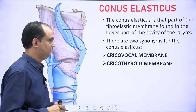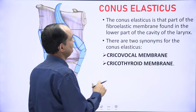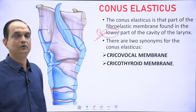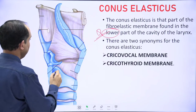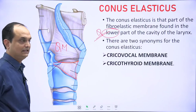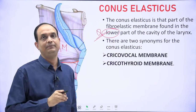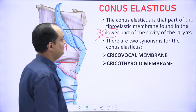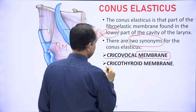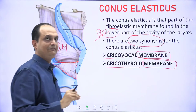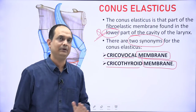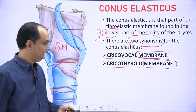The conus elasticus is the part of the fibroelastic membrane found in the lower part of the laryngeal cavity. The upper part is lined by the quadrangular membrane and the lower part by the conus elasticus. There are two synonyms for conus elasticus that cause student confusion: cricovocal membrane and cricothyroid membrane. All three — cricovocal membrane, cricothyroid membrane, and conus elasticus — are the same structure, present in the lower part of the laryngeal cavity.